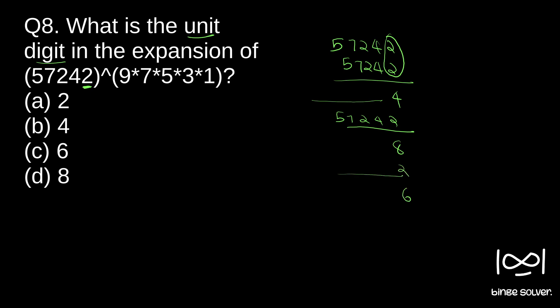If we multiply again we get 16, so the unit place becomes 6. As you can see, the unit place cycles: 2, 4, 8, 6, then if you multiply with 2 again you get 2, so it repeats. This 2, 4, 8, 6 cycle repeats. So the unit digit is 2 at 1 time, 4 at 2 times, 8 at 3 times, 6 at 4 times, then 2 at 5 times, 4 at 6 times, 8 at 7 times, 6 at 8 times, and so on.